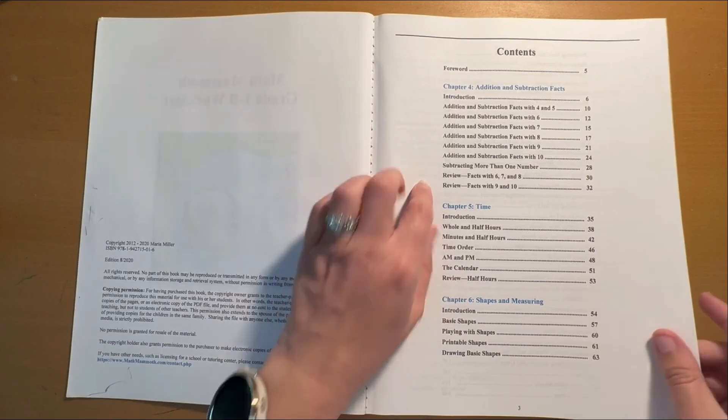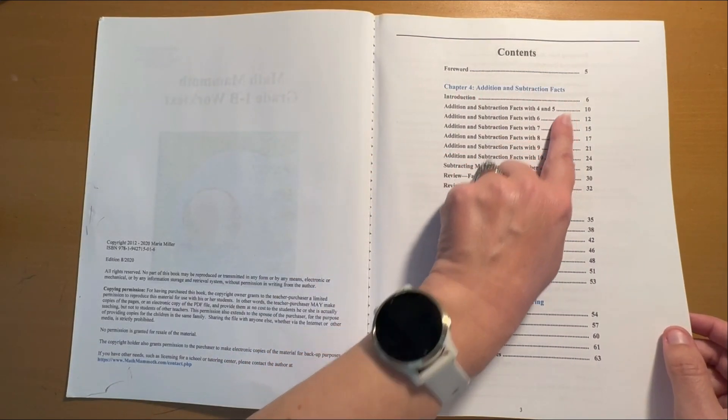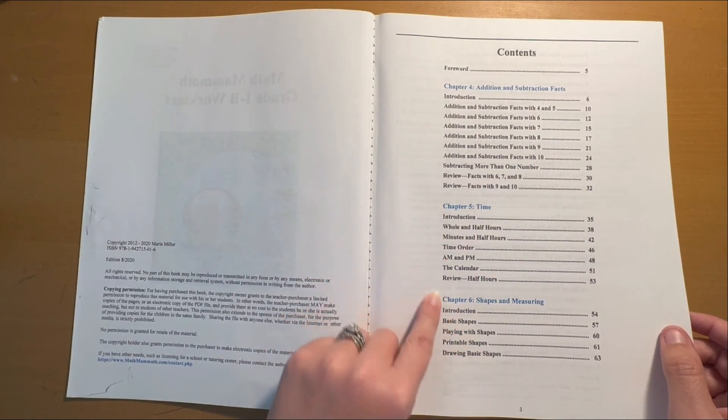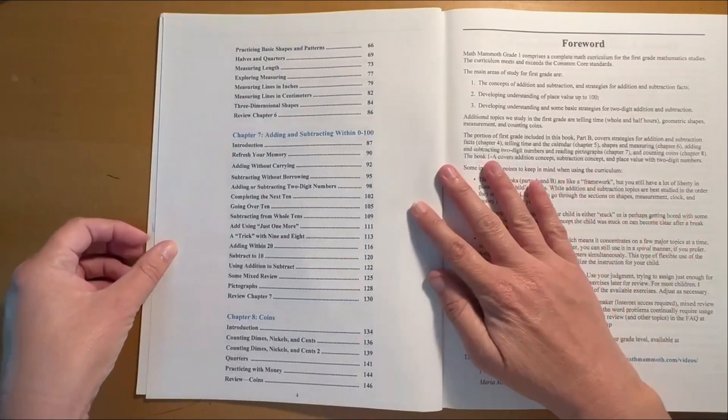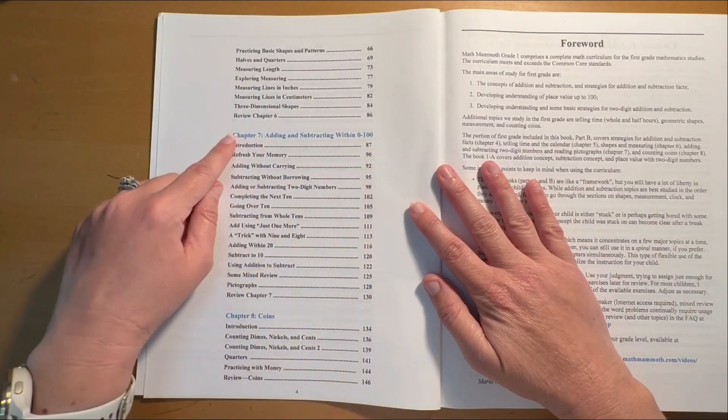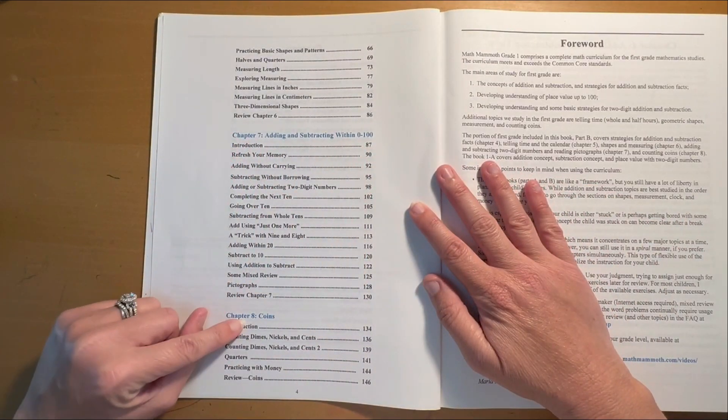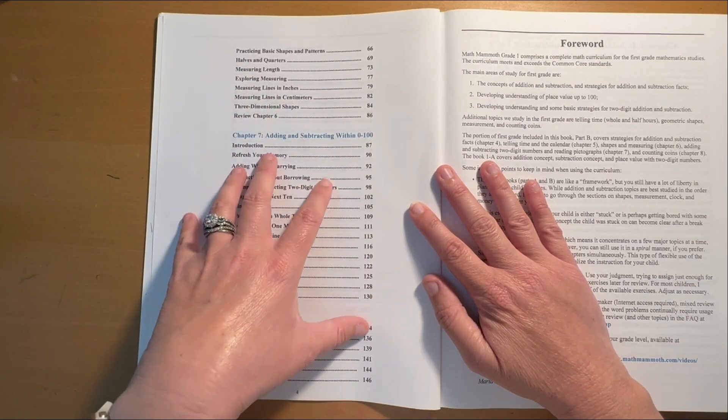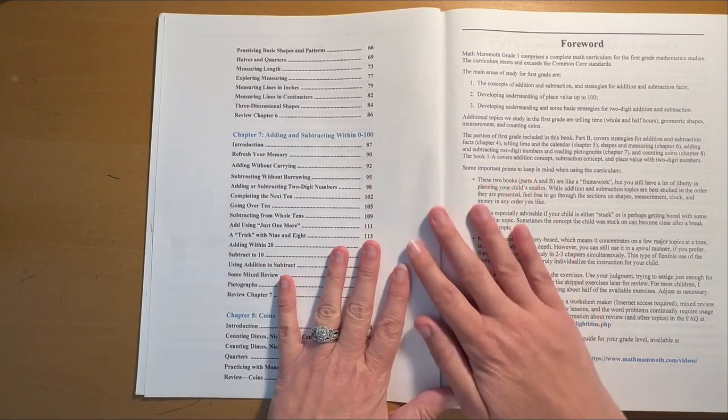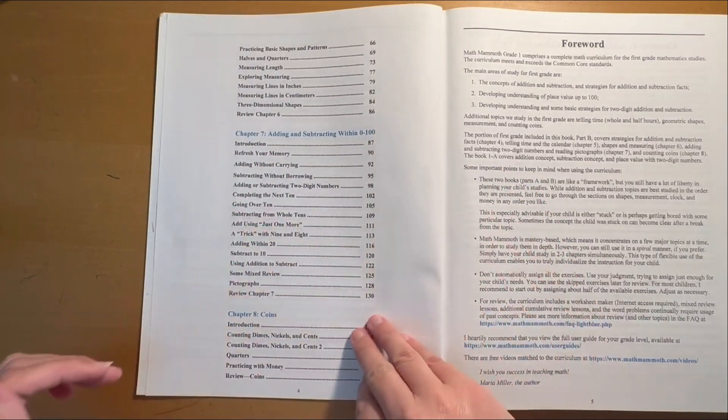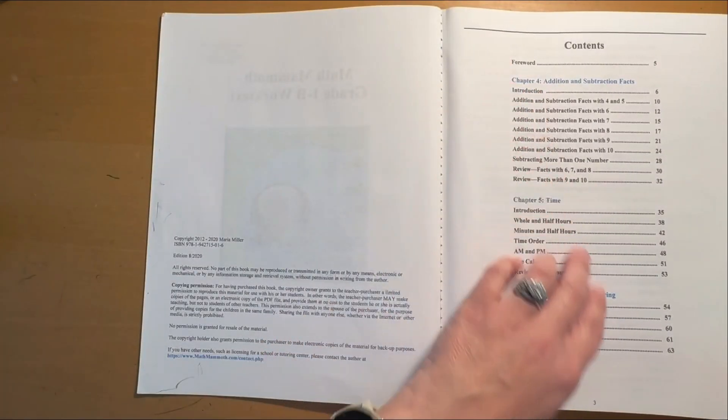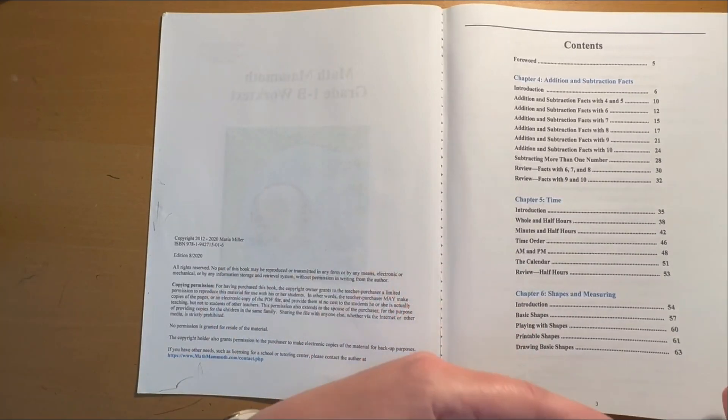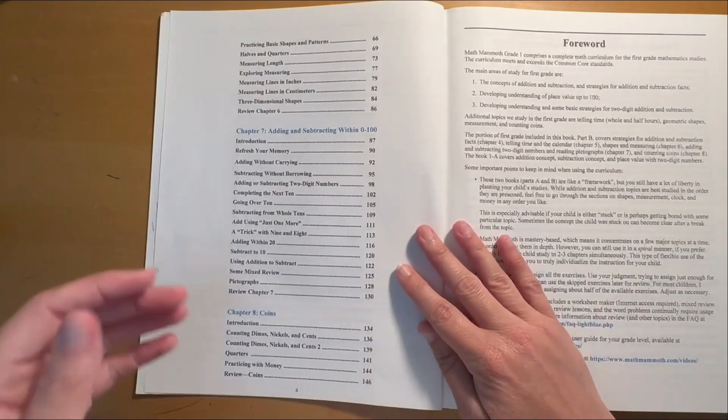So 1B is going to cover some more addition and subtraction facts. Then we're going to go into time, shapes and measuring, adding and subtracting within 100, and then coins. Because each chapter does focus on a particular topic, you can do them out of order. There were times where my daughter just got tired of doing all this addition and subtraction work, so we would take a break and jump to something like time or coins.